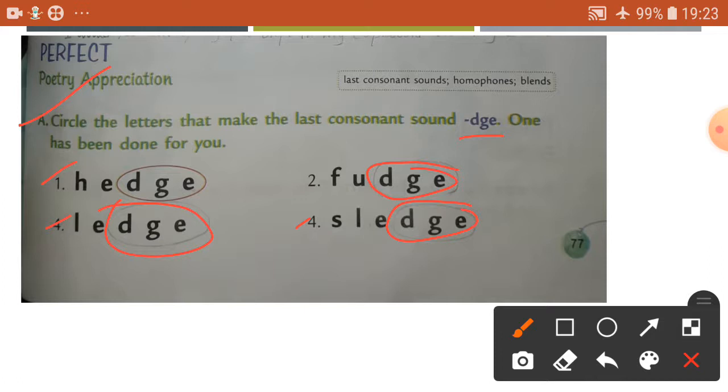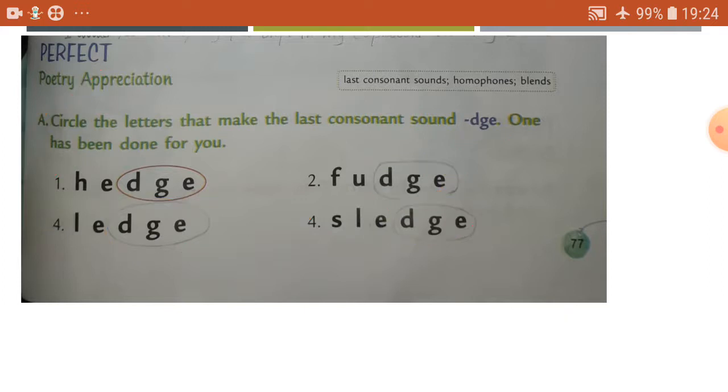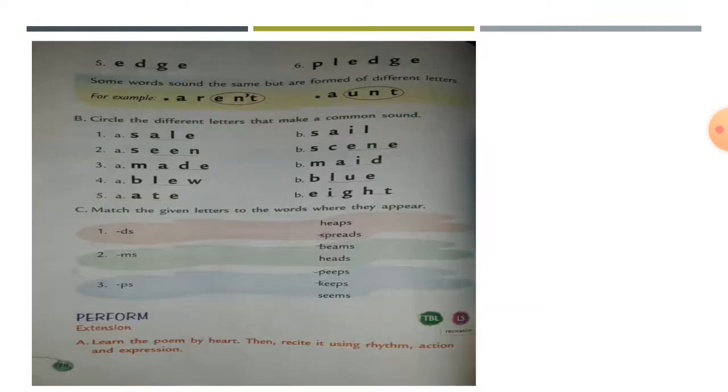The last consonant sound DGE, okay. One has been done for you. See here, one has been done for you: DGE hedge, hedge DGE. Ledge DGE, sledge DGE. So practice.